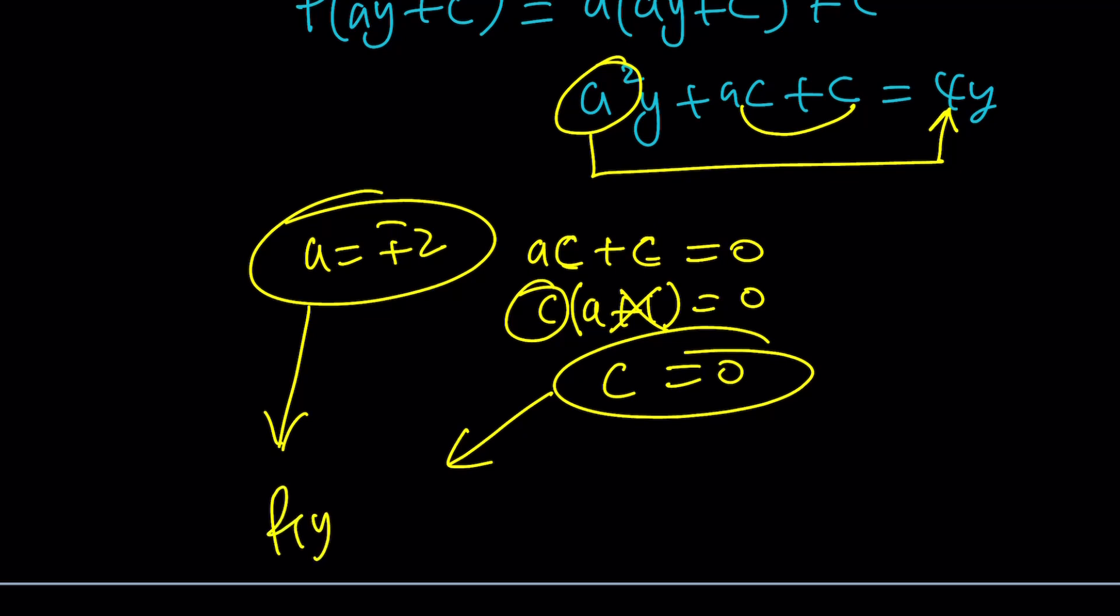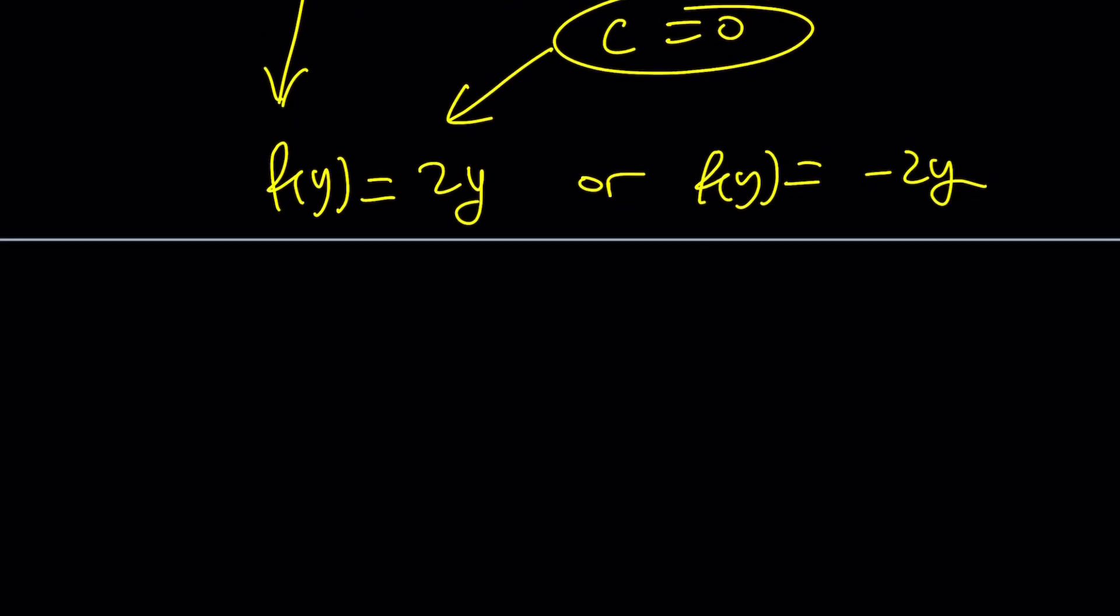So this kind of gives you an idea about what f is going to be if it's linear. And since we assume that f(y) can be written as ay plus c it's going to be plus minus 2y plus 0. Or I can write it as two separate solutions which are going to be a little cleaner. f(y) is 2y or f(y) is negative 2y. So there are two possibilities for f in this case.